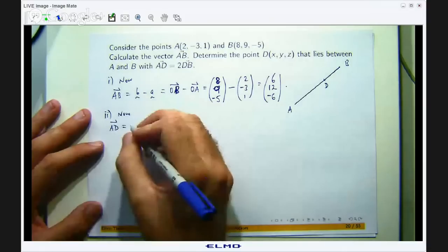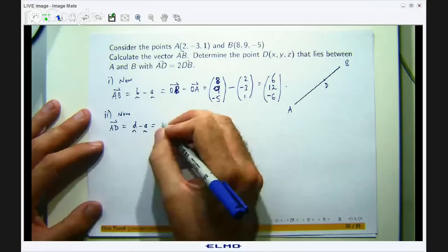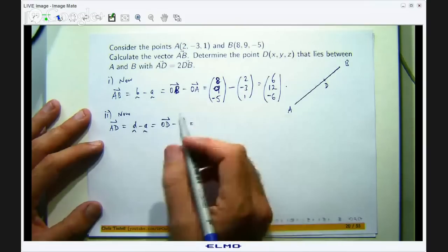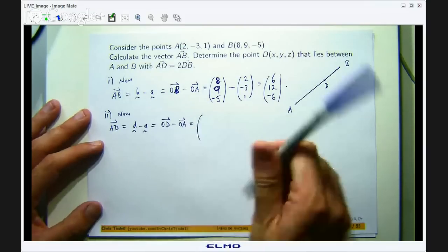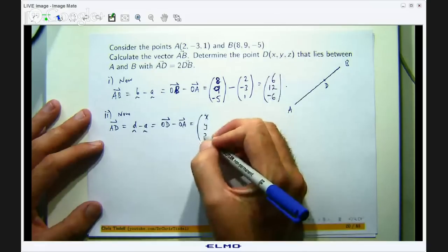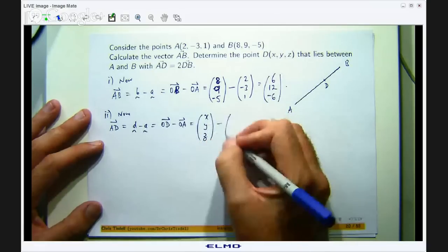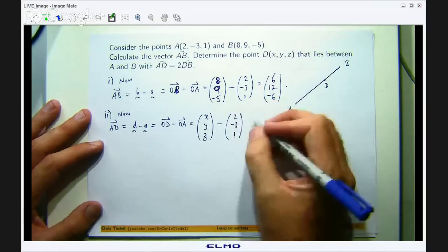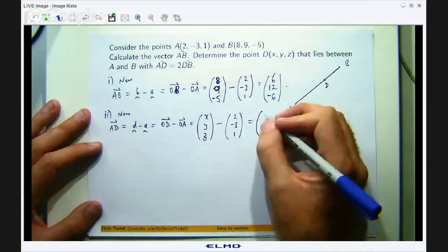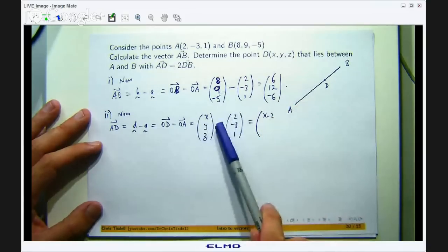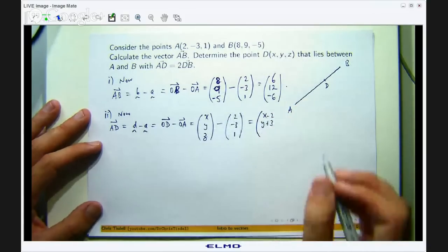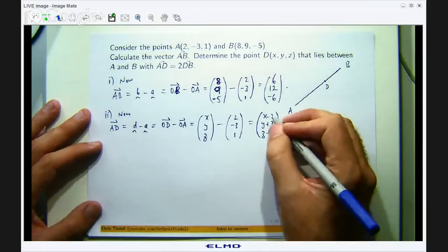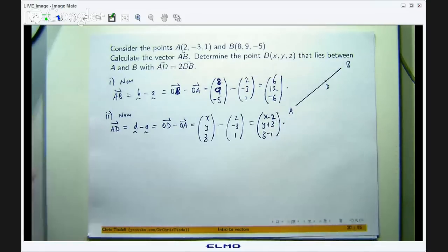Okay so again using the position vectors we will have something like this. Now OD we do not know what that is, it is just X, Y, and Z minus OA which is that. So if I write that as a column, I will get X minus 2, Y minus negative 3, and Z minus 1.